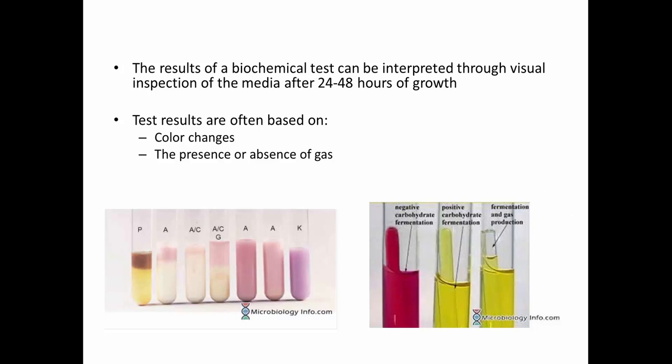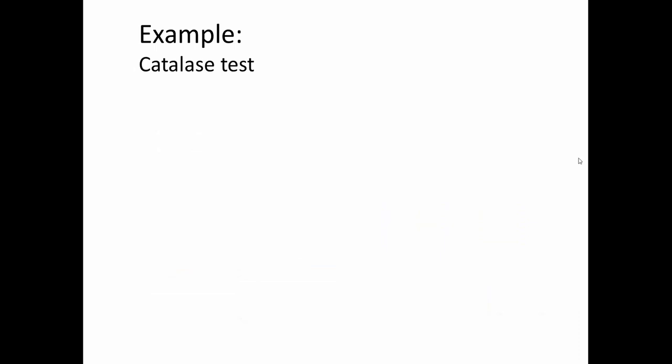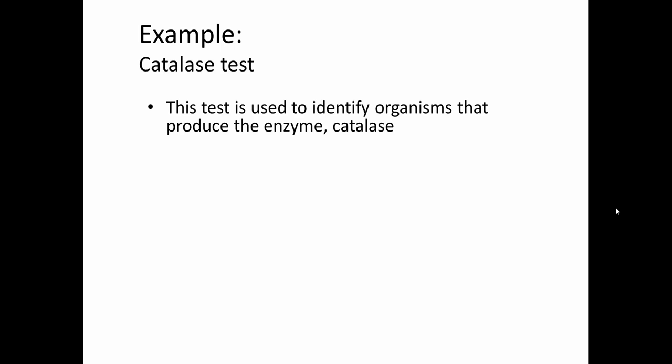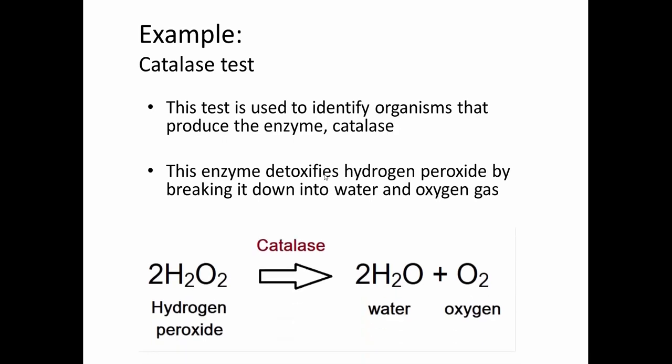Every biochemical test is different, and in order to know what you're looking at you have to examine each individual test. We're not going to get into all the tests today — the goal is not to learn every biochemical test that exists, because there are dozens of them. But let's look at some examples to give a better idea of how this works. One example is called the catalase test, which helps identify the enzyme catalase — an enzyme that breaks down hydrogen peroxide.